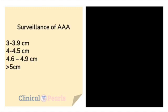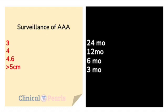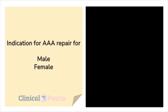Surveillance of triple A (AAA) for the following diameters — just remember: 3, 4, 4.6, 5, and 24, 12, 6, 3. You must be able to rewrite this on your paper again and again for mastery. Indication for triple A repair: for males, greater than 5.5 centimeters; for females, 5 centimeters.